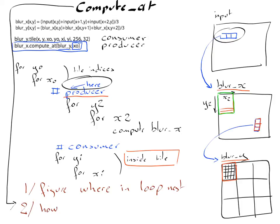And the second thing we had to do was to figure out how much of the producer data is needed by the consumer and generate the appropriate loops that create the data for the corresponding rectangle.